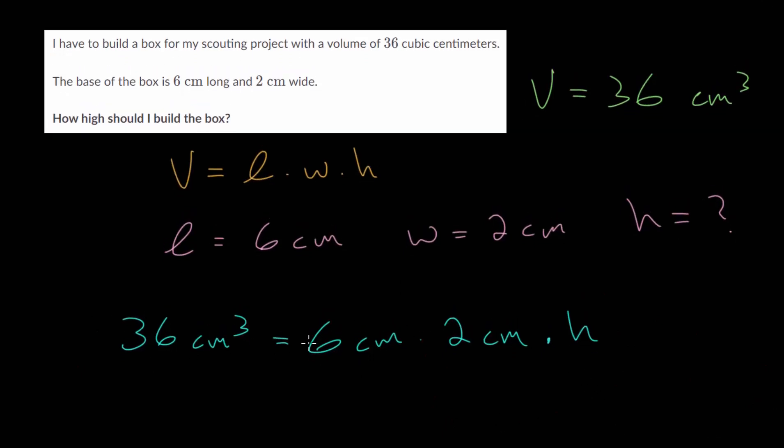So this is going to be 12. We get 36 cubic centimeters, and 6 times 2 is 12, and centimeters times centimeters, that's square centimeters. Let's divide each side by 12 so that we can get h by itself. Let's divide by 12 square centimeters. In doing so, we have 36 divided by 12, which is 3. And cubic centimeters divided by square centimeters, we'd just be left with centimeters.